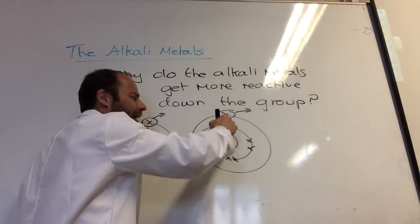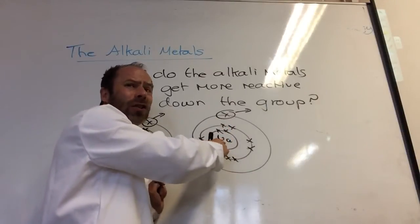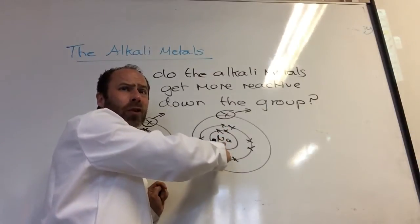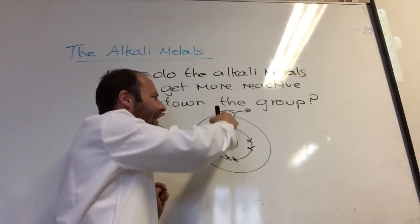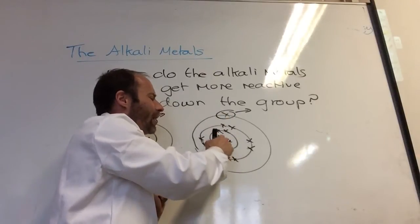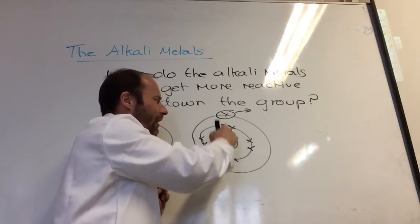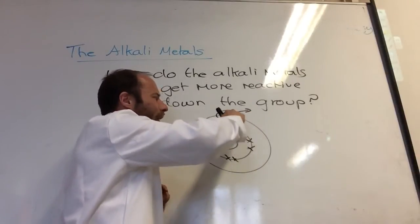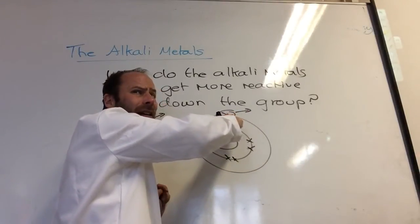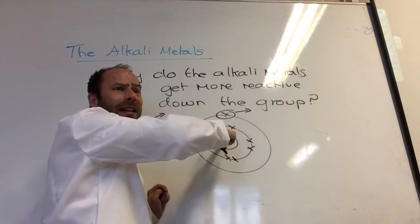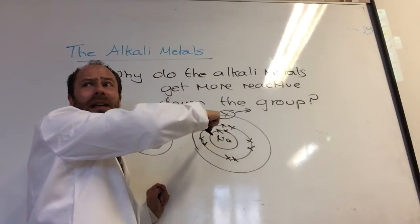It's much further away. The nucleus is where the positive protons are — that's what's attracting that electron and stopping it leaving. So this positive nucleus is stopping that electron from leaving, but if it's further away, the further away it is, the less attracted it's going to be to the nucleus.